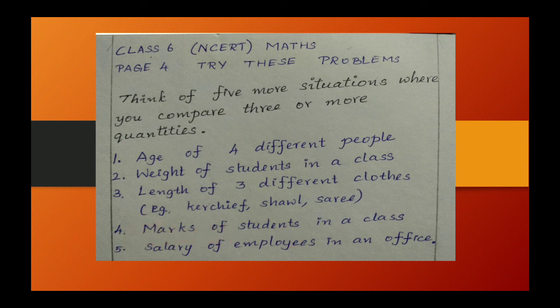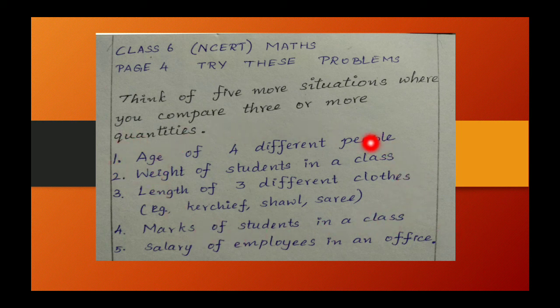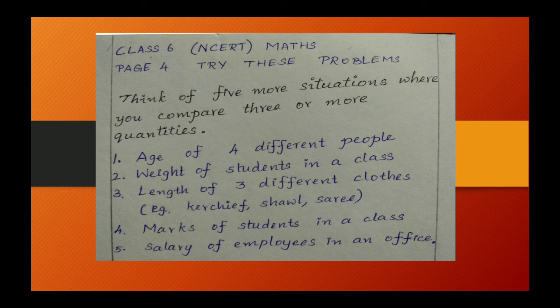Situation number four is marks of students in a class, and the fifth and last situation is salary of employees in an office. So these are the five situations where we can compare three or more quantities. You can find more also. Thank you for watching.